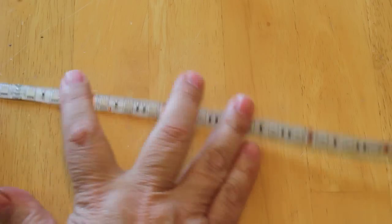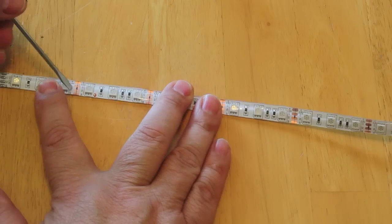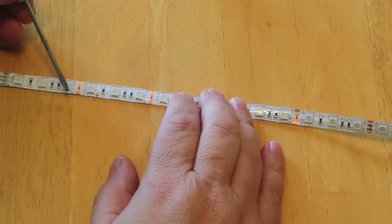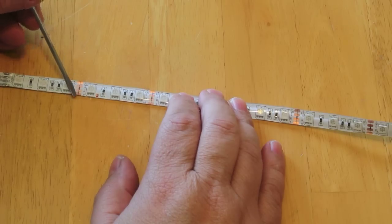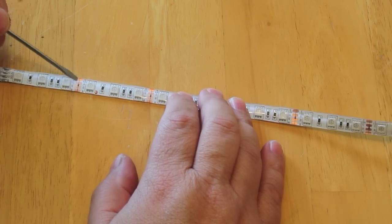When you look at these strips you'll see every about 3 inches you'll have a little spot where it typically has a little icon with a pair of scissors. And you can also tell because you can see these little copper traces here. You want to cut along that little icon of the scissors.